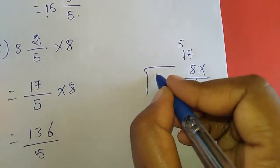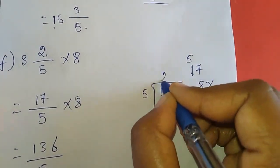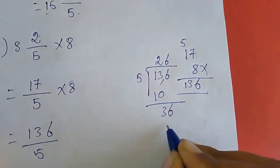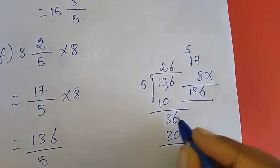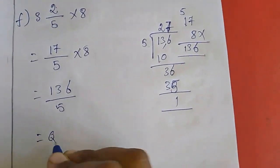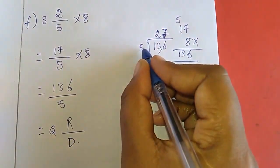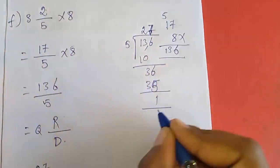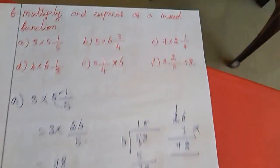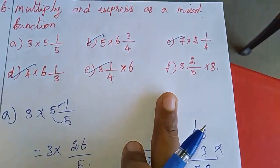This one I am going to change as a mixed fraction. 136 inside 5: 5×27 is 135, remainder is 1. So the answer is 27 and 1 by 5. The balance sums — B, C, D, E — these 4 sums are homework for you.